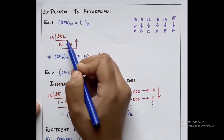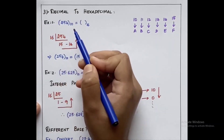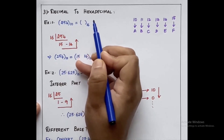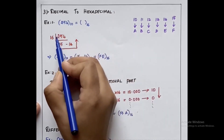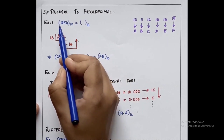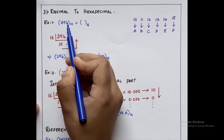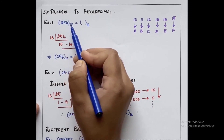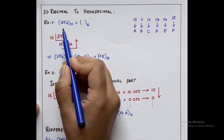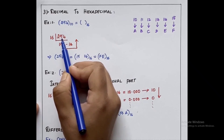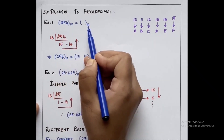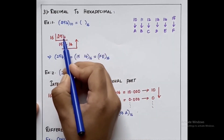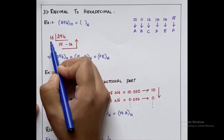Let us see an example where we have to convert the given number 254 (decimal) into its equivalent hexadecimal number. The process is the same — we have to check if it is an integer or a fractional part. Here we do not have any fractional part, so it is a purely integer part. We have to divide by the corresponding base value, which is 16.